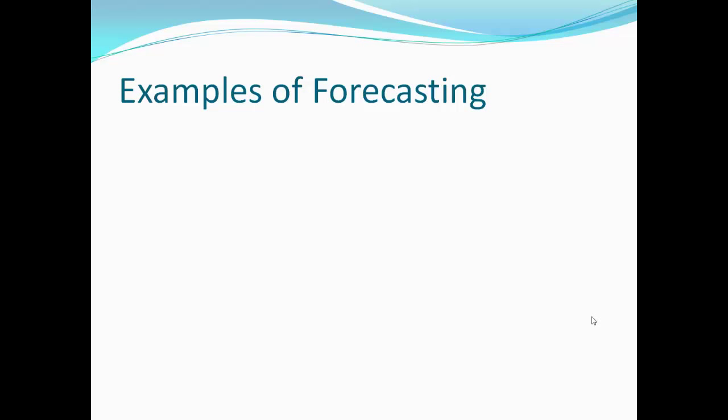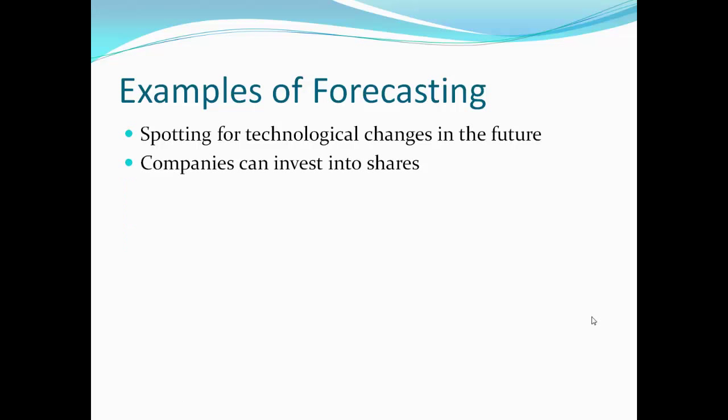There are many great examples to show the benefits to a business from using forecasting methods. A good example is spotting for technological changes in the future. This means that you can prepare to either enhance the technology or get rid of it. A good example is the shift from old TVs to new plasma televisions.